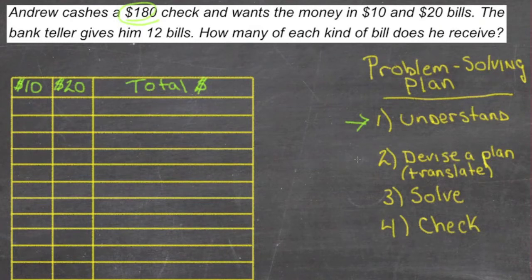So our plan this time is going to be to use a table and see if we can sort of stumble on the right combination. Let's start with 12 $10 bills and see what we come up with. If he has 12 $10 bills, then that's all 12 and there's none left to be 20s. So that would be a total of 12 times 10 or $120.